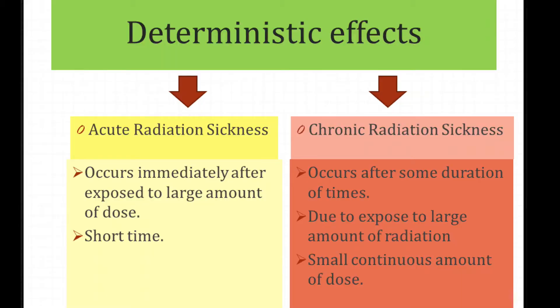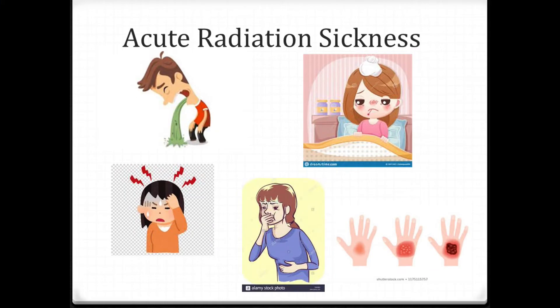Early and mostly tissue-level effects are considered deterministic effects. Deterministic effects include acute radiation sickness and chronic radiation sickness. Nausea, fever, headache, vomiting, tissue and skin burns are examples of acute radiation sickness. These are mostly caused by a large radiation dose delivered in a very short amount of time, causing an immediate health problem experienced within 24 hours of exposure.